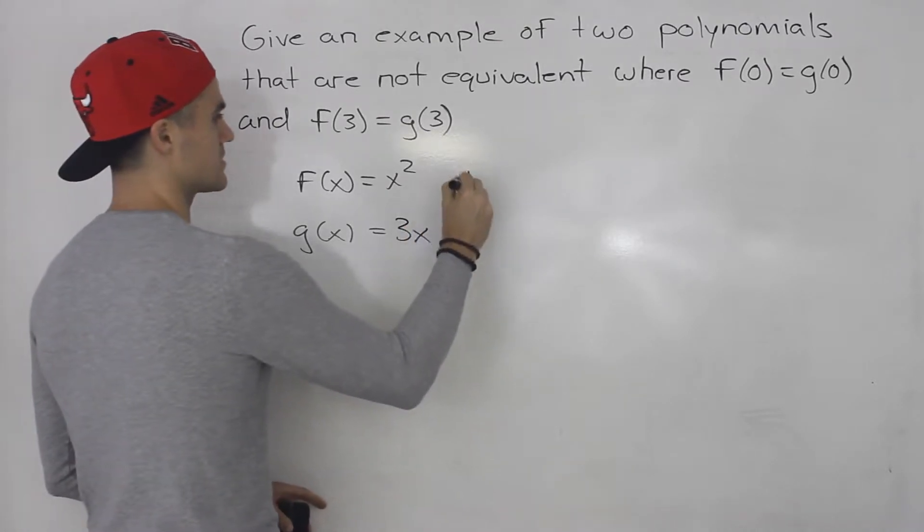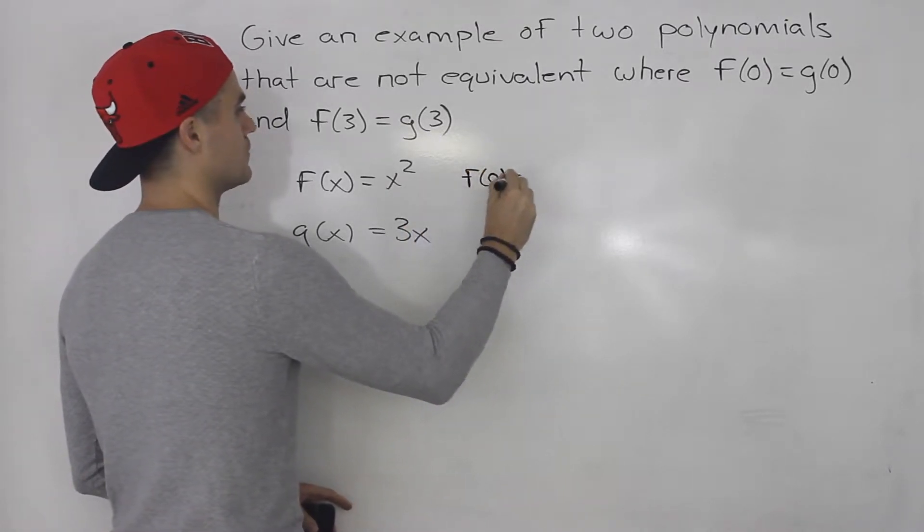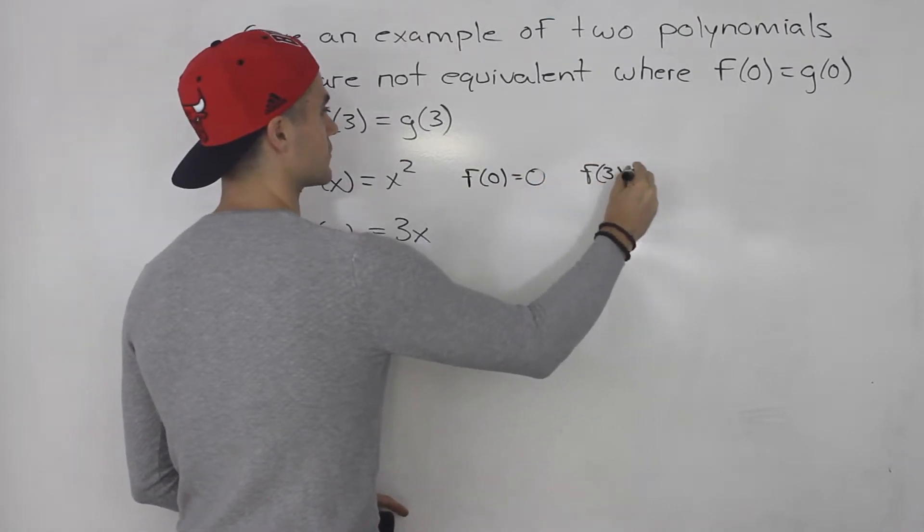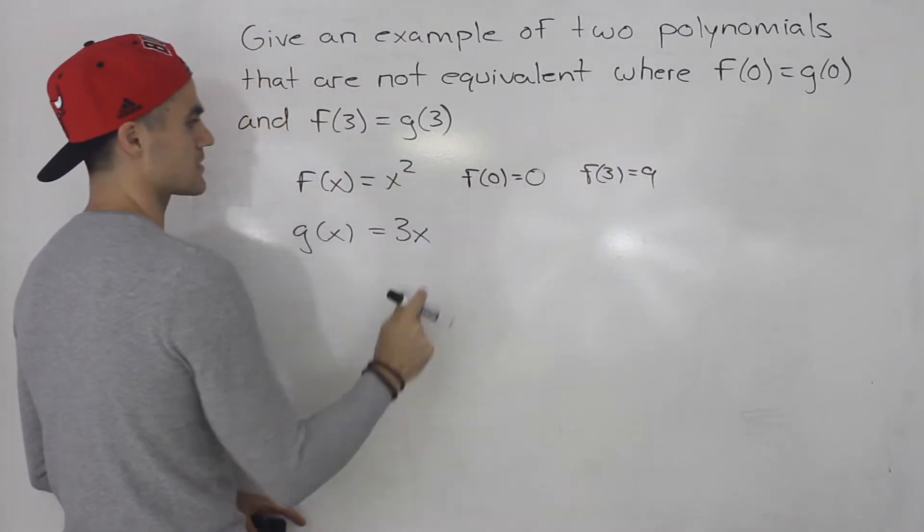Notice in both of these cases we'll have f of 0 is equal to 0 and then f of 3 is equal to 9, right? 3 squared is 9.